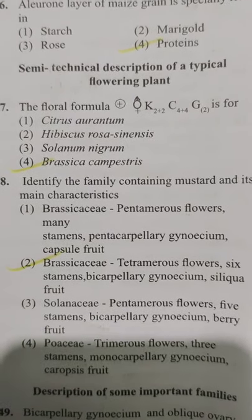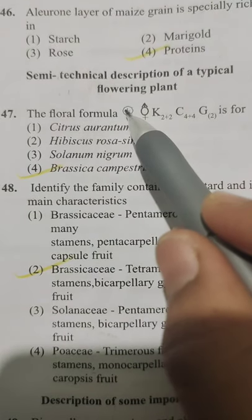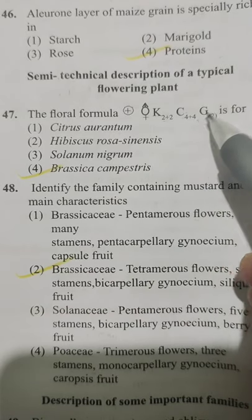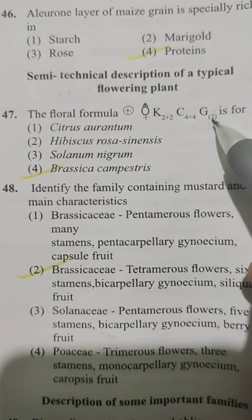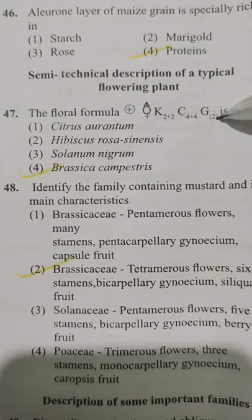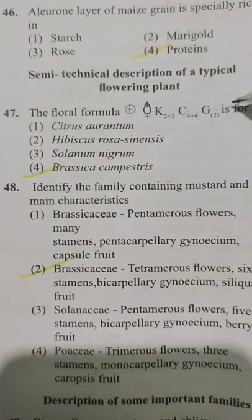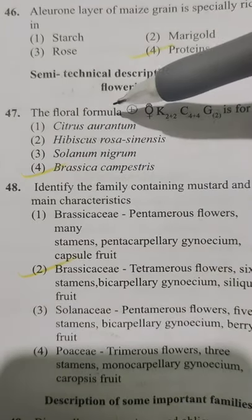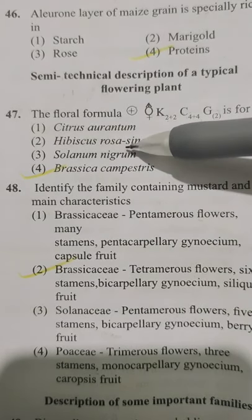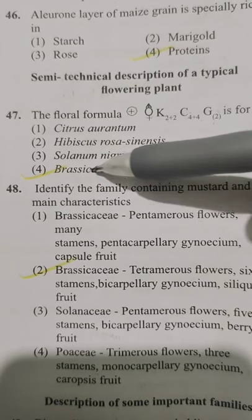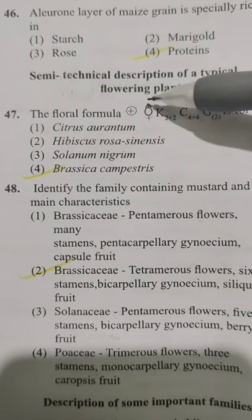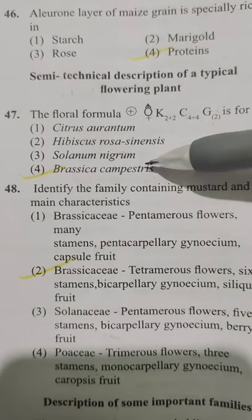A floral formula is given: actinomorphic, bisexual, calyx with 2+2 arrangement, corolla showing 4+4 arrangement, gynoecium superior, bicarpellary and syncarpous. This can be seen in — Option 1 Citrus aurantium, Option 2 Hibiscus rosa-sinensis, Option 3 Solanum nigrum, Option 4 Brassica campestris. The answer is Option 4, Brassica campestris.